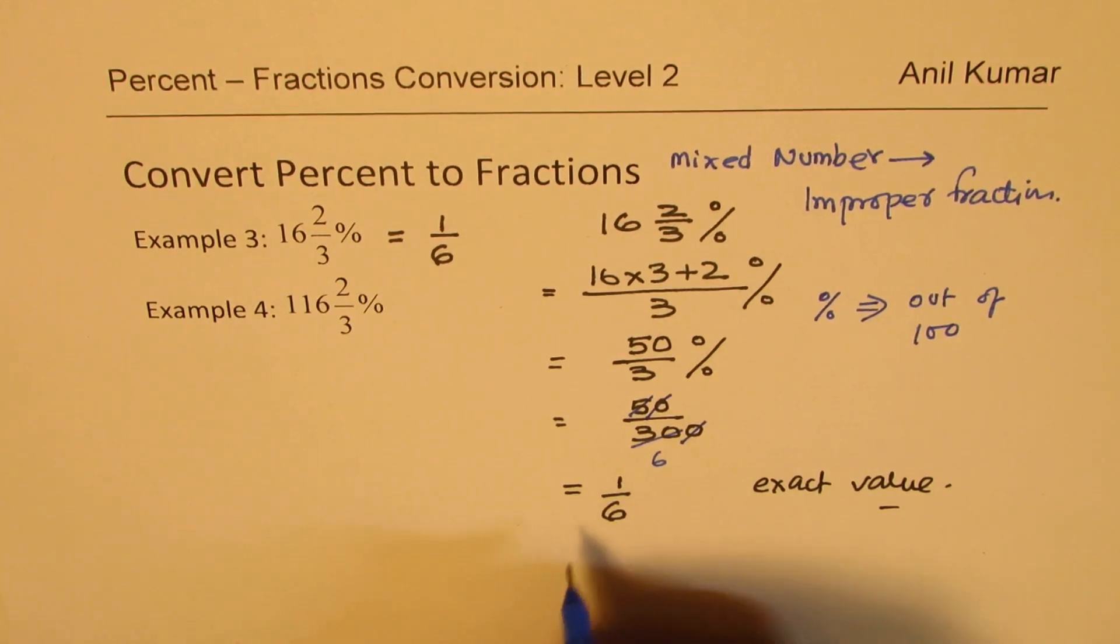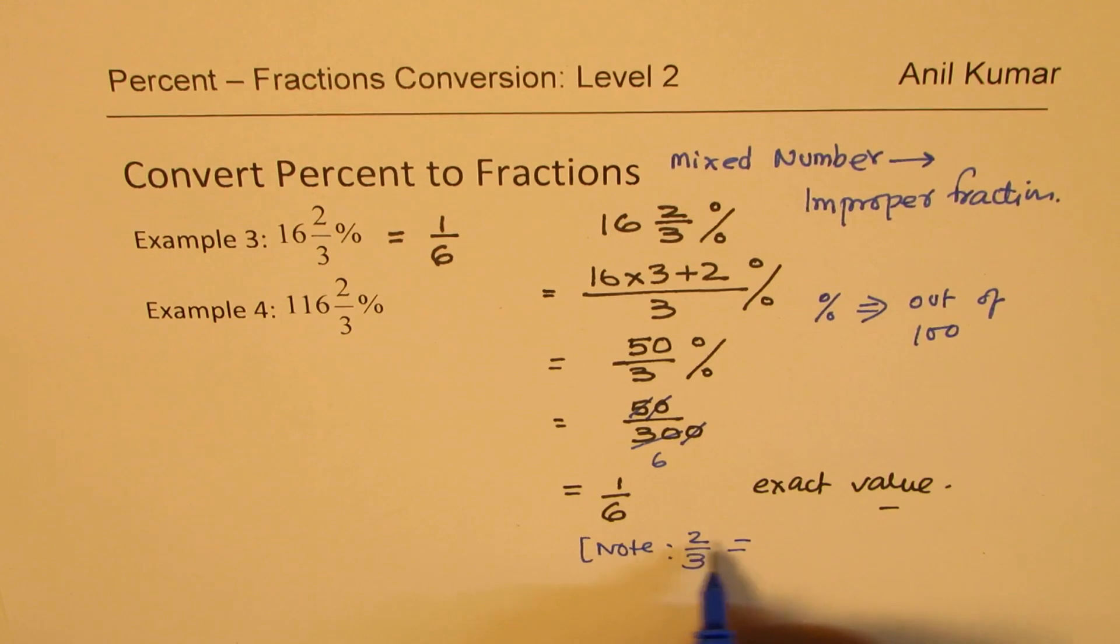So in such cases, to avoid recurring numbers, we should use fractions. So what we got here is exact value, which you will not get by converting to decimals. Since, because, note, let me write down a note here. 2 over 3, if you look into just this part, 2 over 3. 2 over 3 means what? Dividing 0 point, dividing 20 by 3, 6, 6, 6, and so on. This is non-terminating.